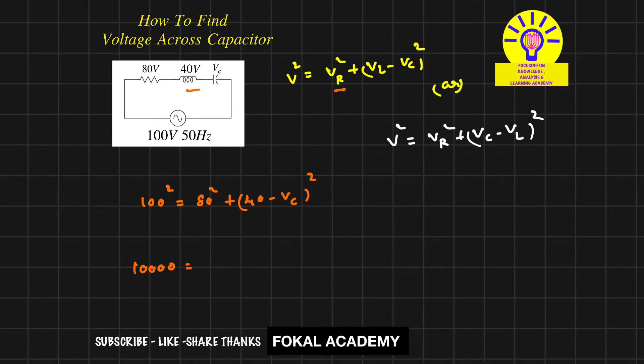Therefore, (40 minus VC) squared equals 3,600, which gives us 40 minus VC equals 60. If we consider VL minus VC, we get VC equals minus 20.